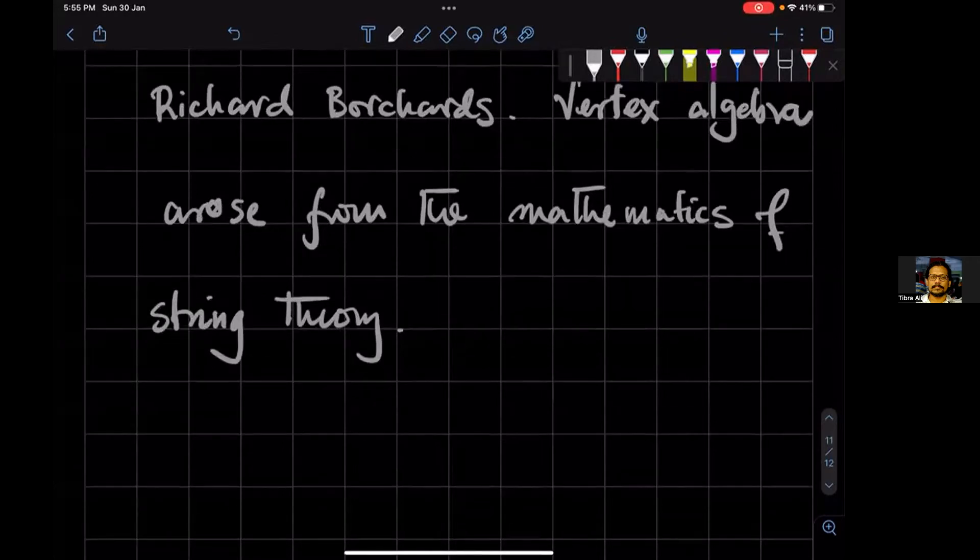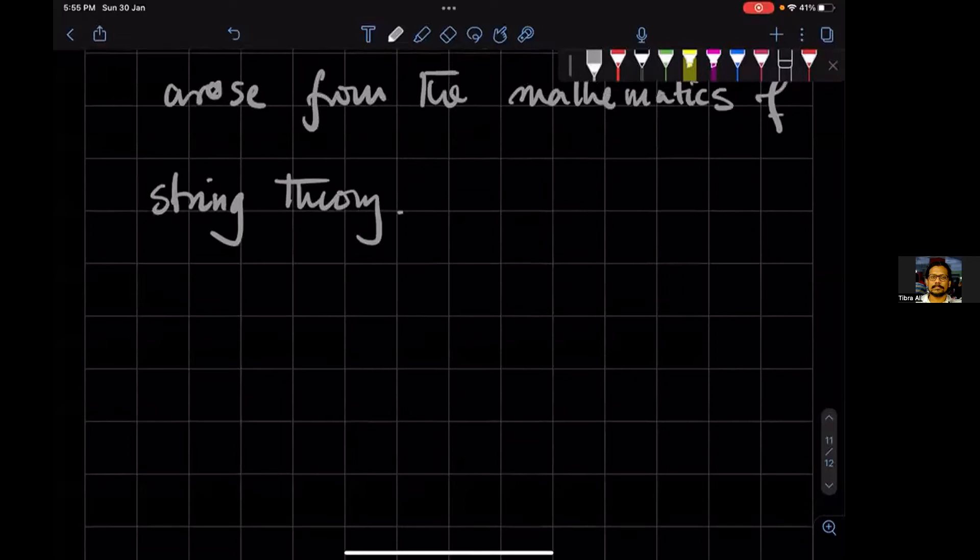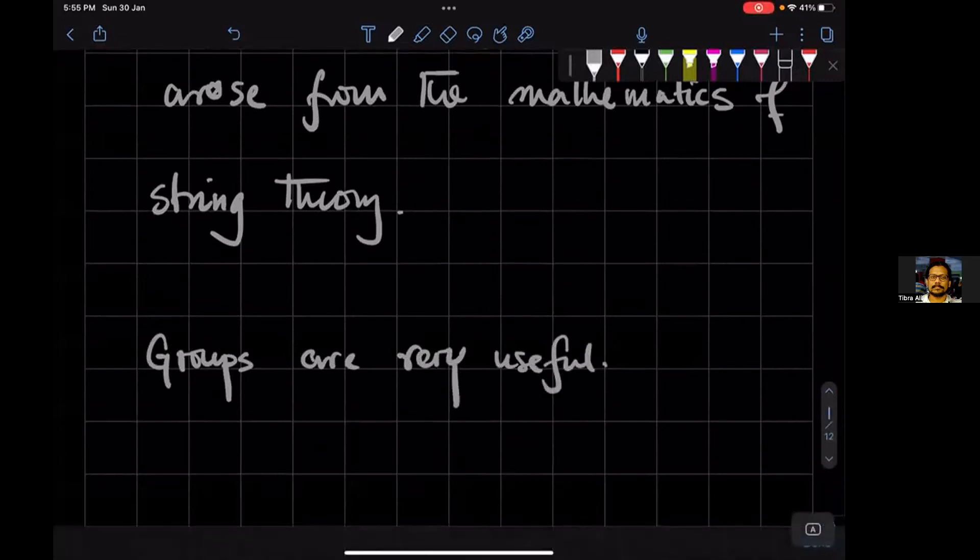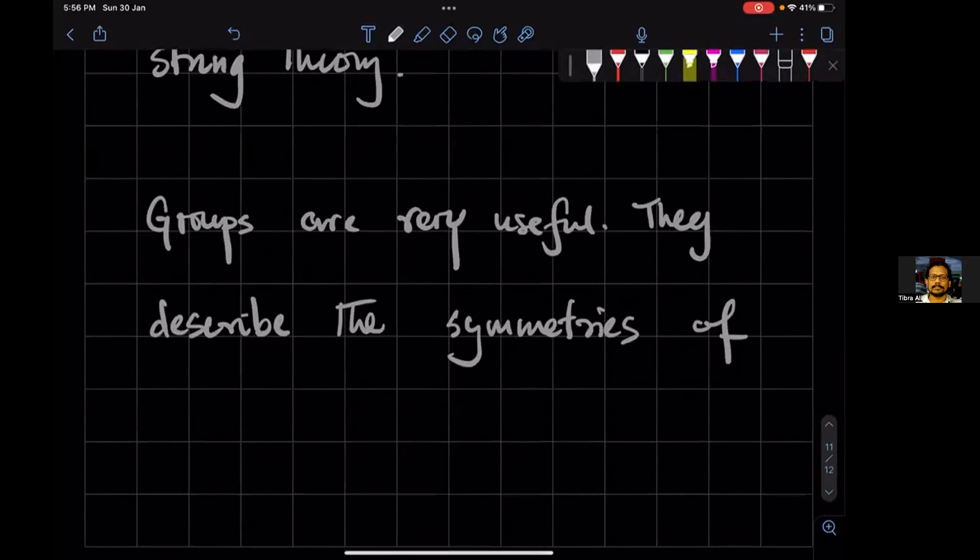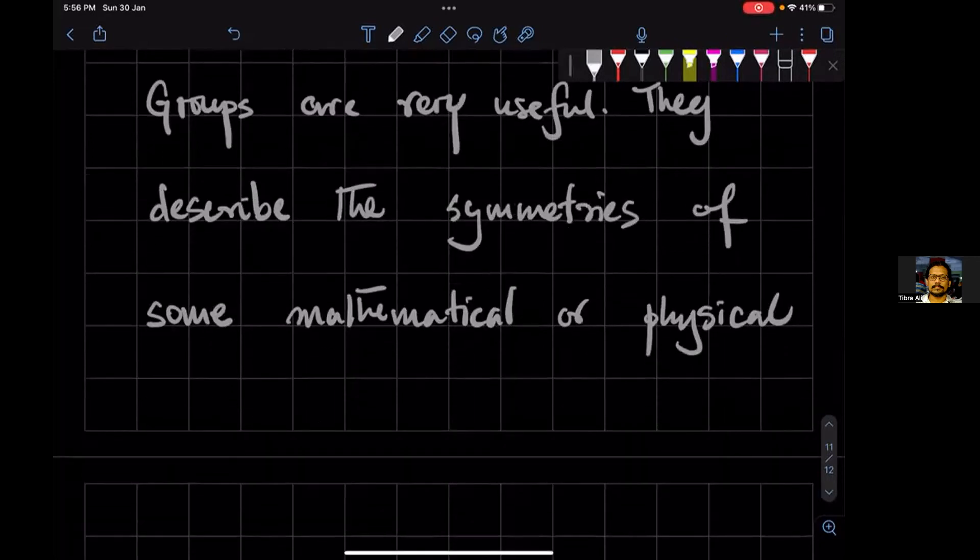So that's the story of the monster. So groups are very useful objects. So this is what I'm going to say: groups are very useful. And the thing is that why do they arise? They arise because they describe often the symmetry or the symmetries of some mathematical physical or physical system.